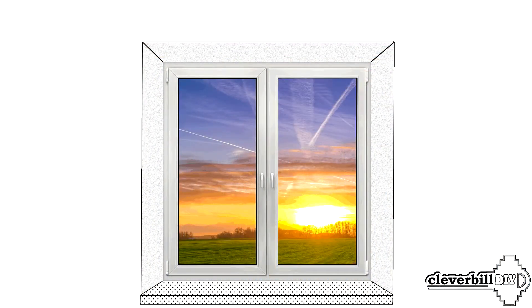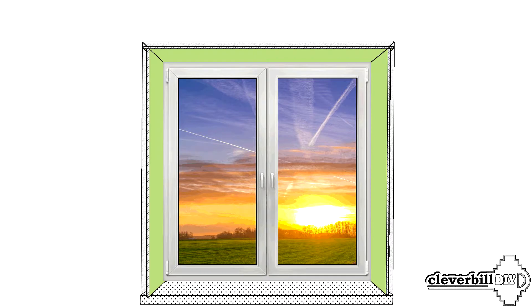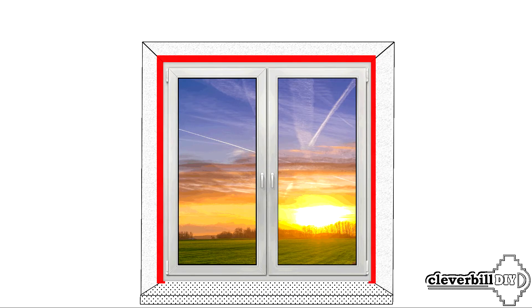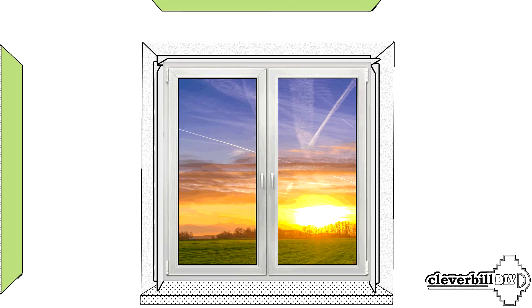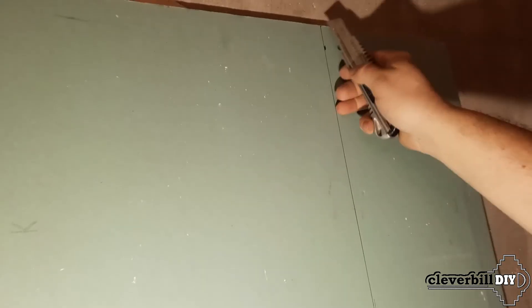Installation of slopes from gypsum plasterboard is carried out with an overlap of a sheet of drywall directly behind the window frame. This must be taken into account when ordering and installing new windows. In a situation with a missing gap between the window frame and the wall, as an option, use aluminum corners fixed directly to the frame. The corners act as guides and allow you to hook drywall to them.